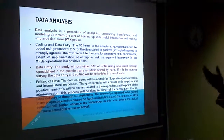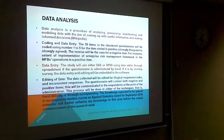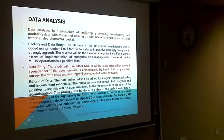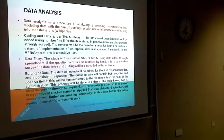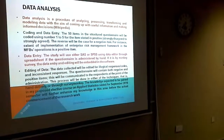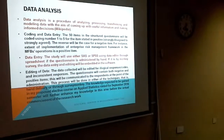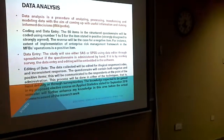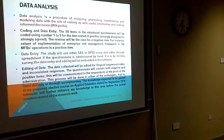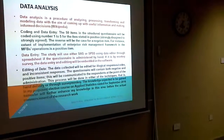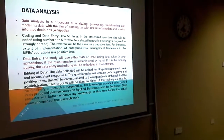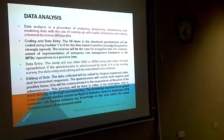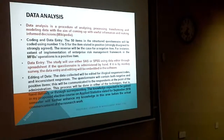For coding and data entry, the 50 items in the structured questionnaire will be coded using numbers 1 to 5 — for positively worded items, from strongly disagree to strongly agree, and the reverse for negative items. The study will use either SAS or SPSS via the data editor for data entry, and the data collected will be edited for illogical responses. Respondents will be informed at the point of administration about the presence of both negative and positive items.